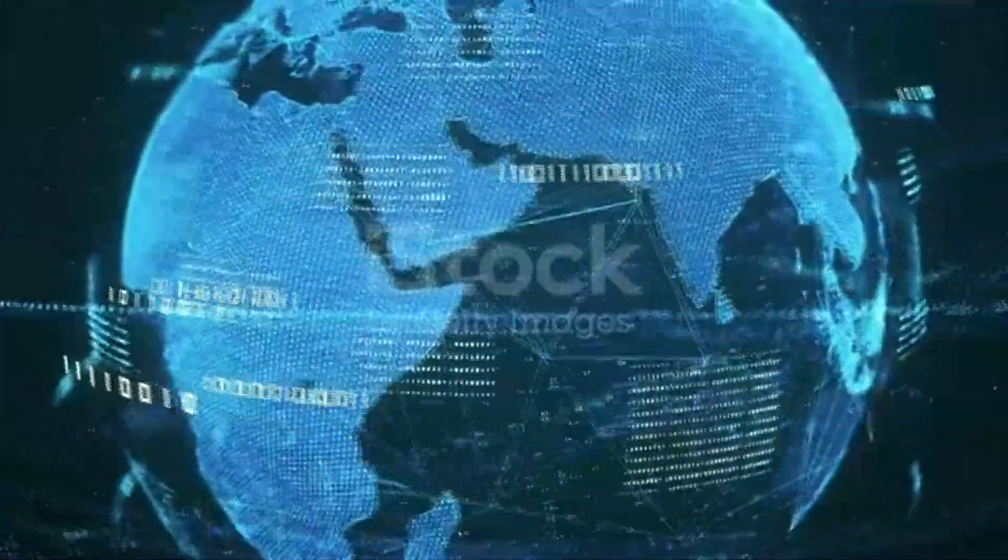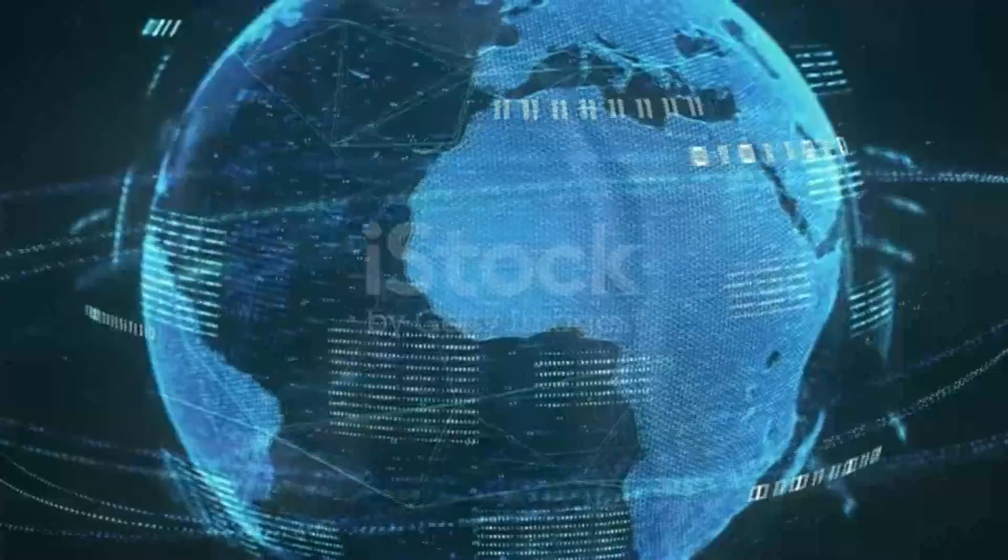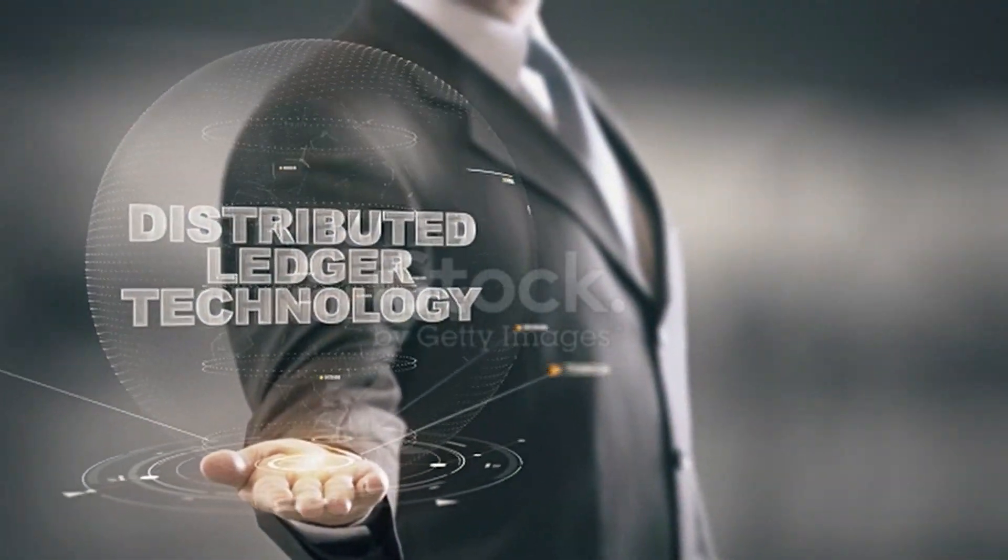Today there are 47,000 plus nodes all over the world where this digital ledger is maintained and updated. There is a public account in digital form of all the bitcoin transactions. It's called a ledger.